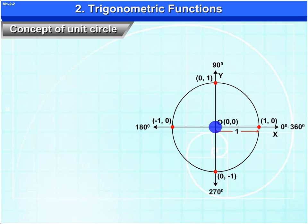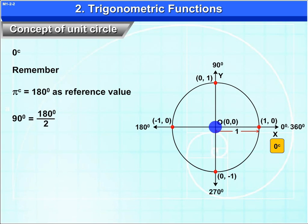In radians, we can write it as 0 and superscript small c. This means radians. Remember pi radians equals 180 degrees as reference value. So 90 degrees is 180 degrees upon 2, that equals 90 degrees. That is, pi upon 2 radians.